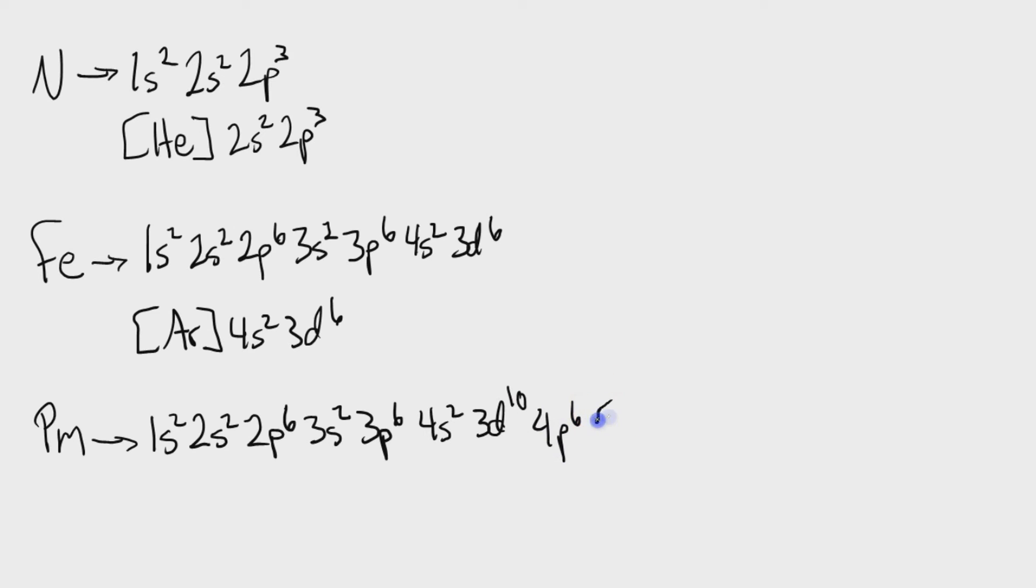Then it's 4p6, on down to 5s2. After 5s2 we've got the 4d10, on up to 5p6, and then 6s2. And we have now finally reached the 4f block, and it is 4f5. Alright, let's double check ourselves to make sure that we did this correctly. 2 plus 2 is 4.